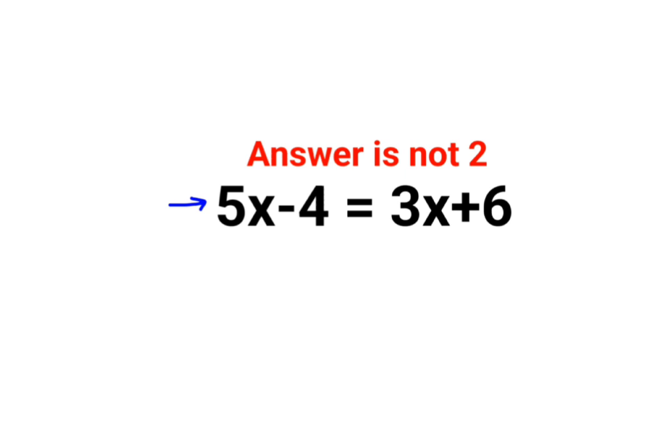Shift variables to one side of the equal sign and all constants to the other side. What are constants? Constants are just numbers, and variables are the values with x involved. So first, let's shift the variables to this side.